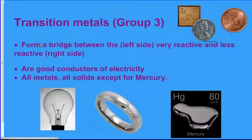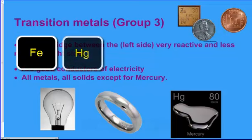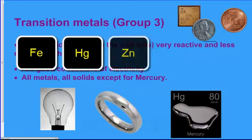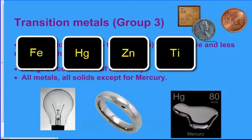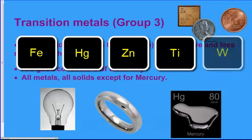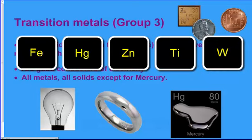The popular ones in this category are going to be iron, mercury, zinc, and titanium. That's what that ring is for. We'll also talk about tungsten which is in light bulbs. It's the wire inside light bulbs.